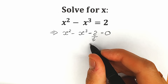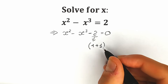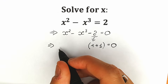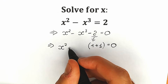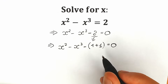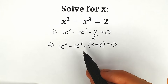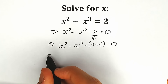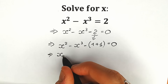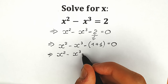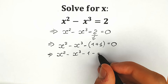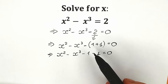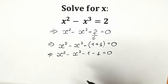Instead of 2, we write 1 plus 1 equal to 0, with the same beginning. So as a result, we have x squared minus x cubed minus (1 plus 1). We open the parenthesis with the minus sign, changing all signs. So we get x squared minus x cubed minus 1 minus 1 equal to 0. We subtracted 2 from both sides, wrote it as 1 plus 1, and opened the parenthesis.